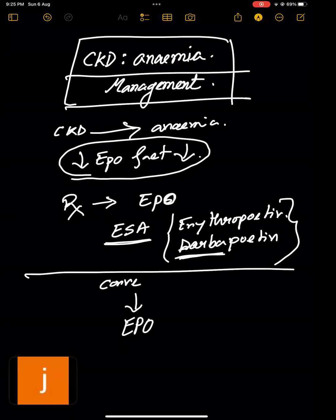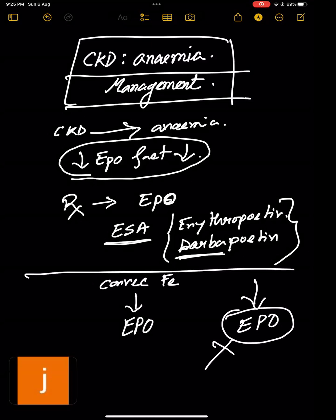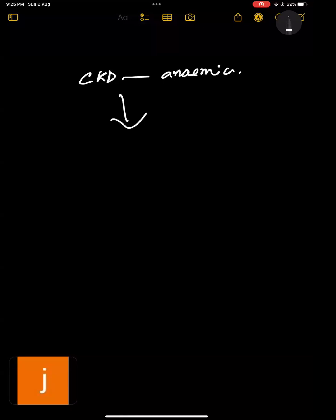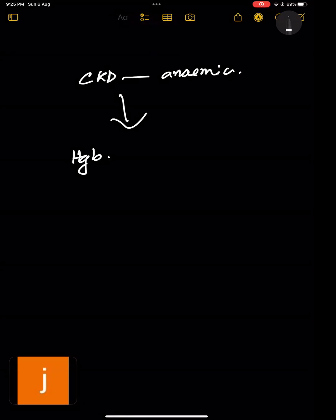Before giving EPO, you need to be sure you have corrected the iron level. Why? If iron level is low, even if you give EPO it's helpless - EPO cannot work because you need iron to make RBCs and hemoglobin. So whenever there is a CKD anemia question in your exam, first look at the hemoglobin level, then TSAT (transferrin saturation) level, then ferritin level.